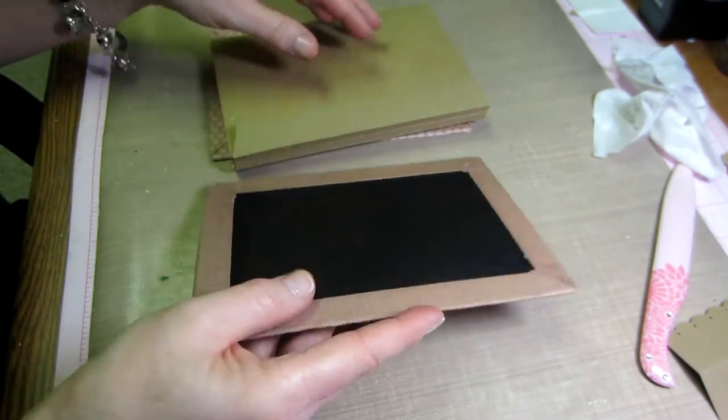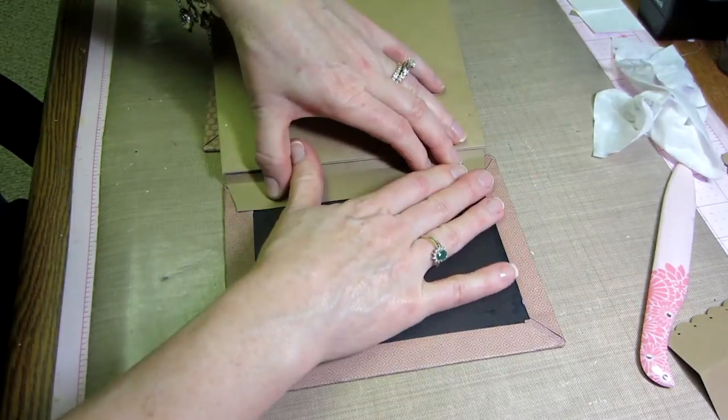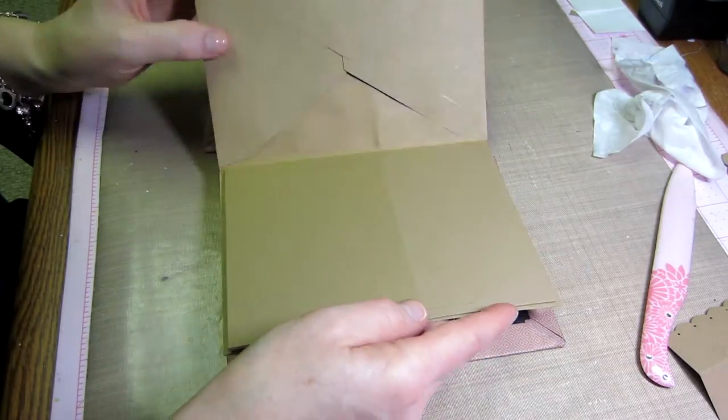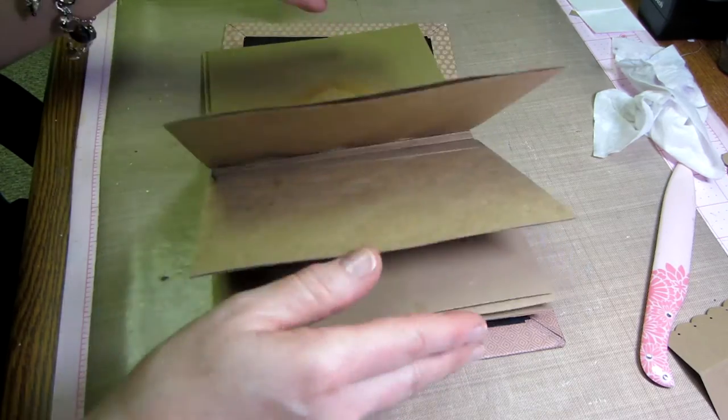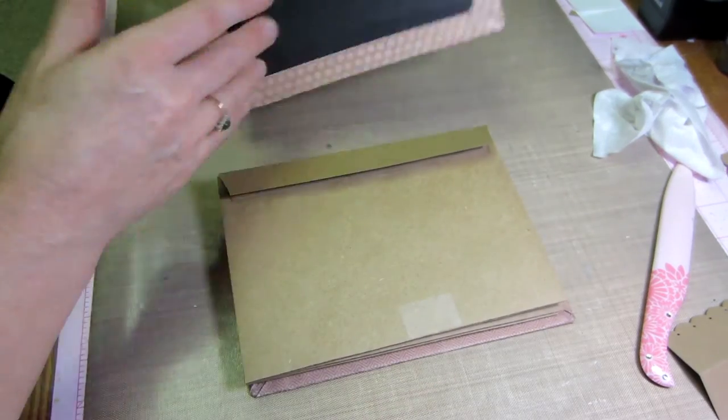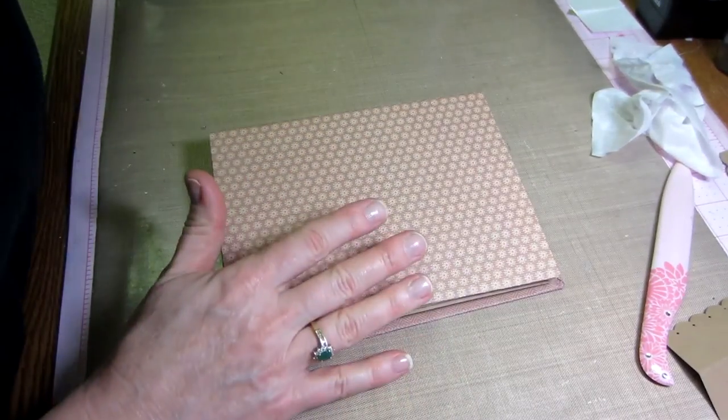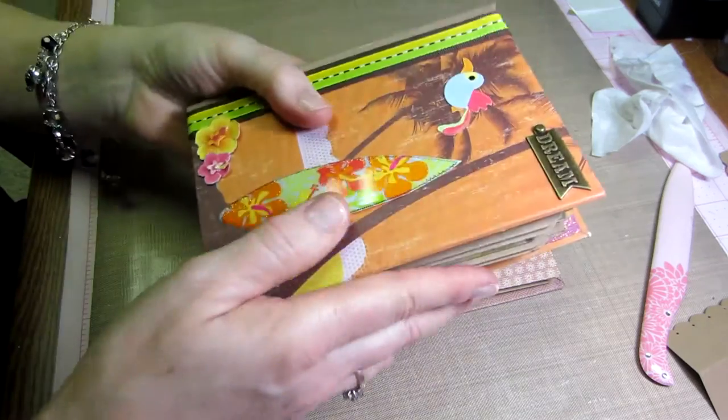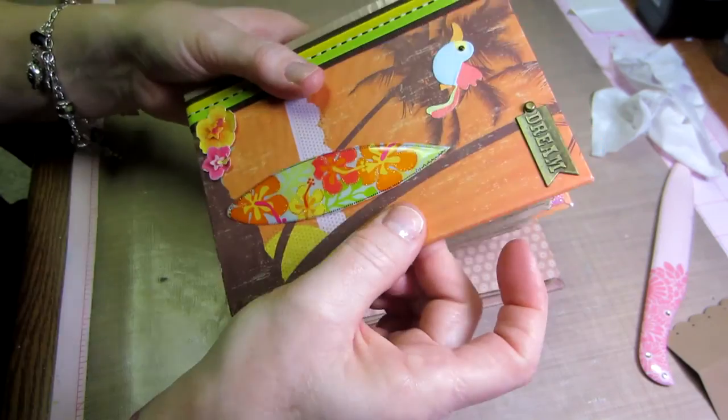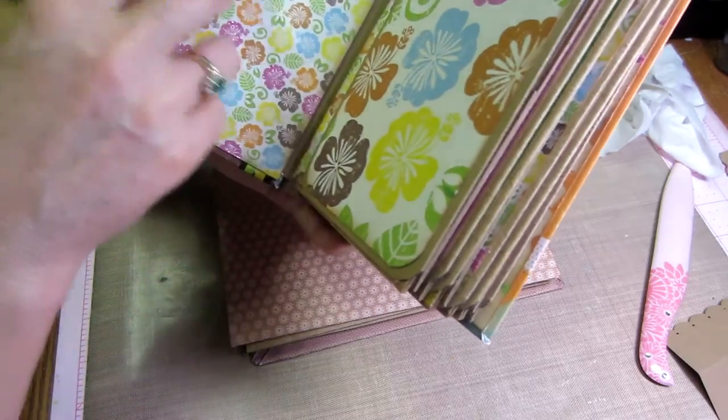When we attach this hinge here then we're going to cover this with our decorative paper and you won't see that. That's why we haven't done any covering of anything yet. I've made ribbon ties on these before. I've used an eyelet, I've popped a hole with my crop-a-dile and put an eyelet in there, hung a charm.